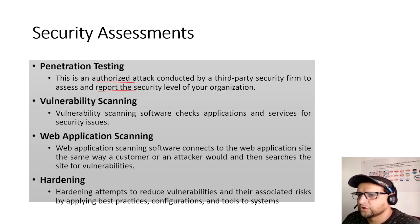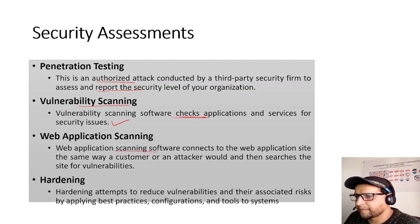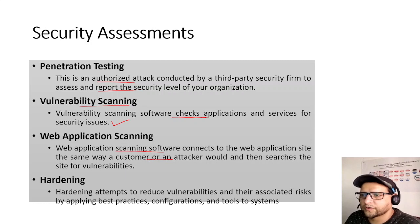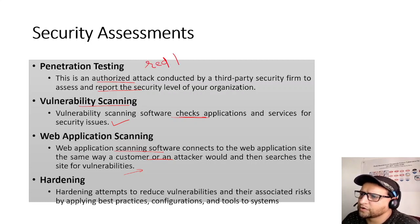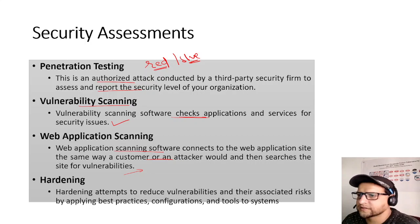Vulnerability scanning checks applications and services for security issues — many cloud providers offer their own tools. Web application scanning connects to a website the same way a customer or attacker would and searches for vulnerabilities such as cross-site scripting or cross-site request forgery. Red teams act as attackers, blue teams act as defenders. Cloud providers offer their own vulnerability scanning tools, including versions designed specifically to run in the cloud.